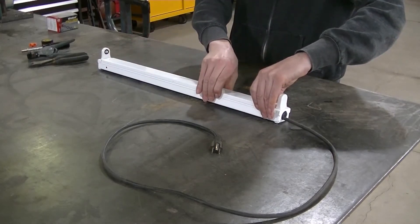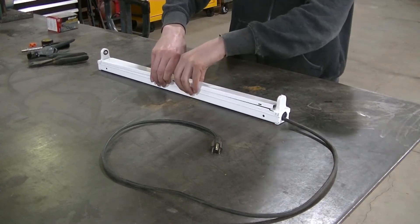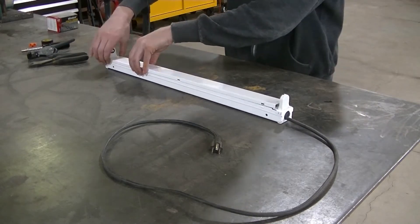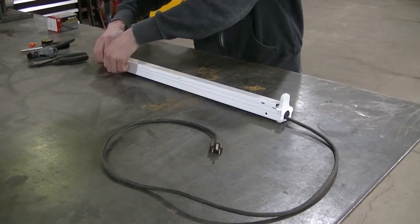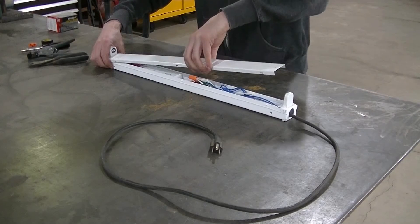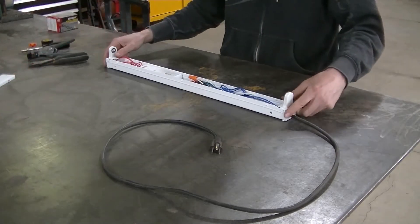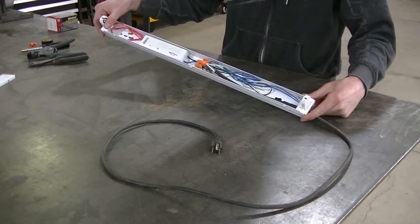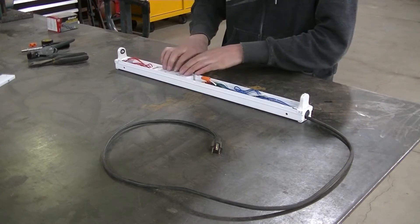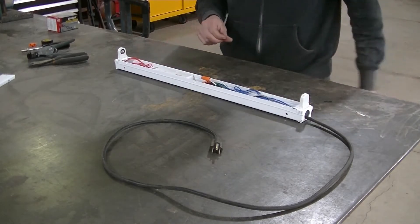This light here, these smaller T8s are pretty simple lights. This cover just snaps off like that. And then inside this is where you are going to see the ballast right here and all your wiring connections are in here.